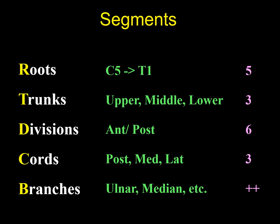Those five roots combine into three trunks: C5 and C6 form the upper trunk, C7 is the middle trunk, and C8 and T1 form the lower trunk. Each trunk has an anterior and posterior division, giving six divisions total. Those recombine into three cords: the posterior cord is a combination of all three posterior divisions, the lateral cord is the anterior upper and middle divisions, and the medial cord is the anterior lower division. The branches include the ulnar nerve, median nerve, and all the other nerves of the arm.